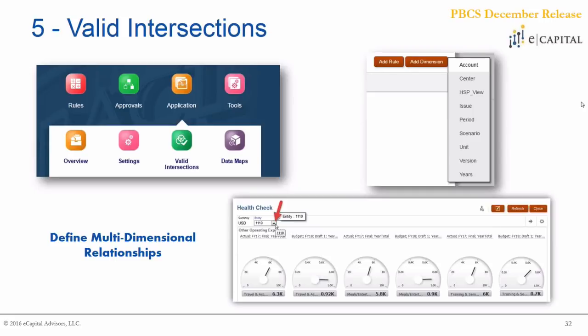When used in conjunction with security, Valid Intersections can really simplify your overall model and reduce the security that needs to be applied. New to 2017, you can now use attributes in valid intersections as well, which can greatly reduce the number of valid intersections you'd have to set up. If you can tag certain hierarchies or account types with a certain attribute, you can then use that attribute within the definition — potentially saving a lot of time in setup.